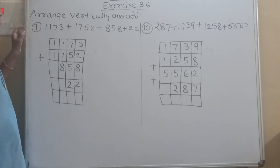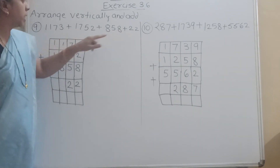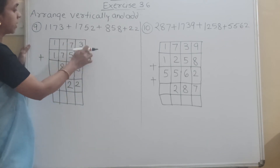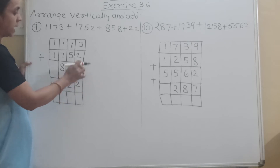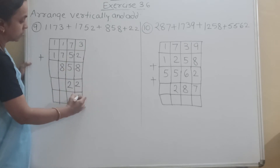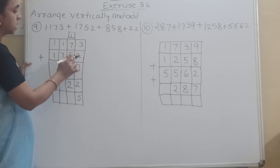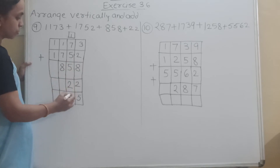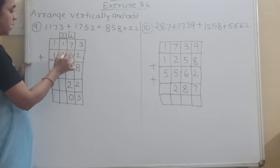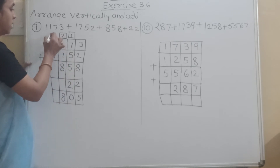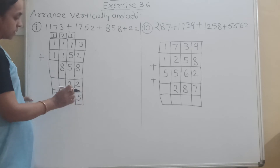Now see the ninth question: 1173 plus 1752 plus 858 plus 22. Write four-digit numbers first, then three-digit 858, then two-digit 22. Ones: 8 plus 2 is 10, 10 plus 2 is 12, 12 plus 3 is 15. Write down 5, carry 1. Tens: 7 plus 1 is 8, 8 plus 5 is 13, 13 plus 5 is 18, 18 plus 2 is 20. Write down 0, carry 2. Hundreds: 2 plus 1 is 3, 3 plus 7 is 10, 10 plus 8 is 18. Write down 8, carry 1. Thousands: 1 plus 1 is 2, 2 plus 1 is 3. Our answer is 3805.